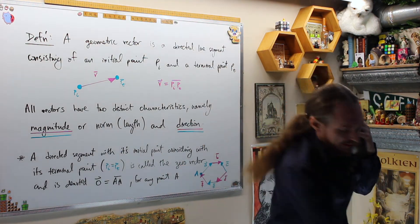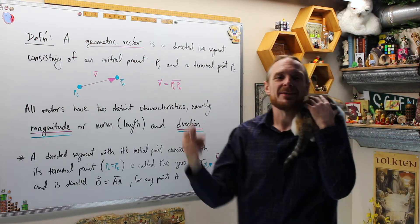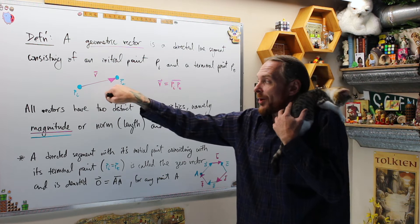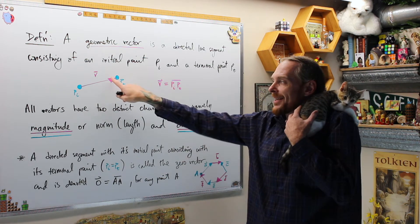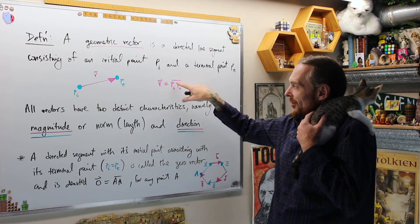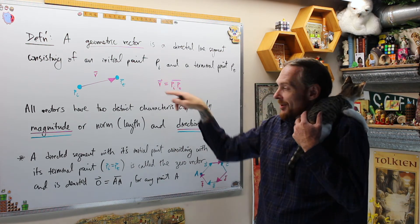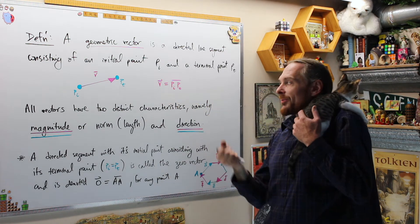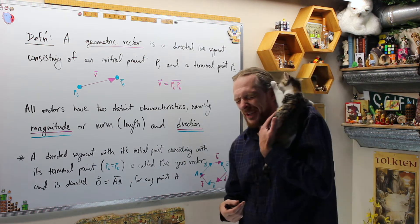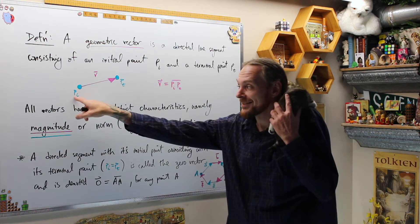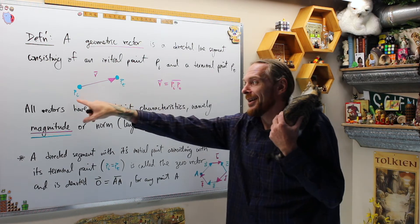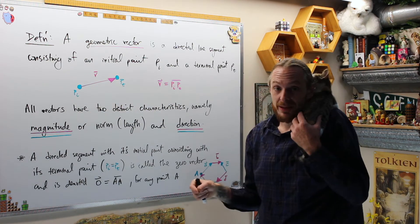The definition of a geometric vector is a directed line segment consisting of an initial point and a terminal point. Anytime I have two points in the plane, I can create a line segment — but if it's going to be specifically a vector, it's now a directed line segment. This is what we call the initial point, and this is the terminal point.